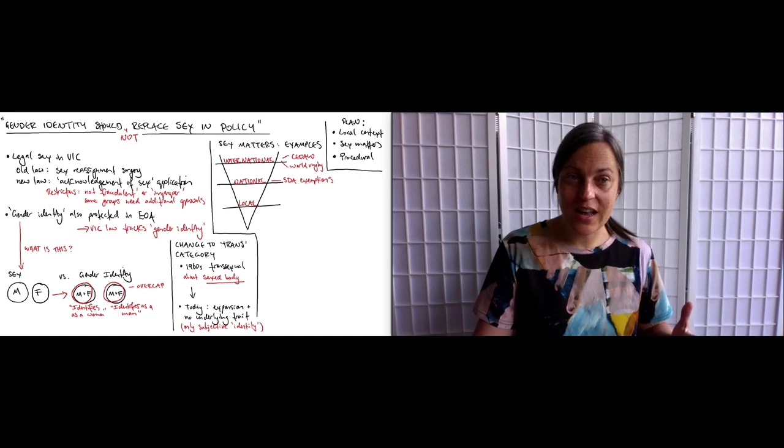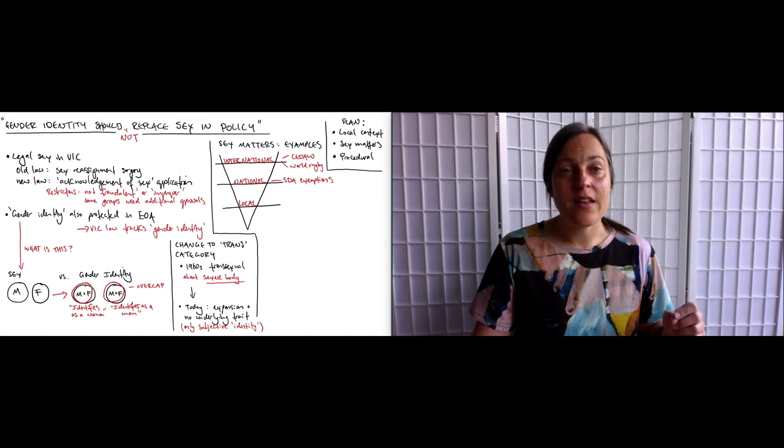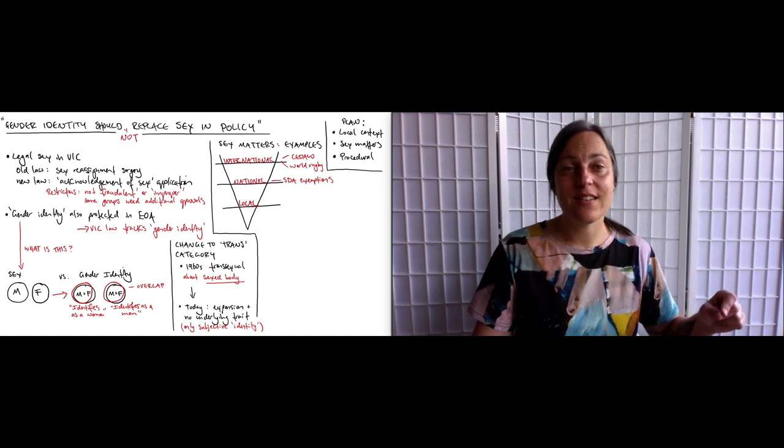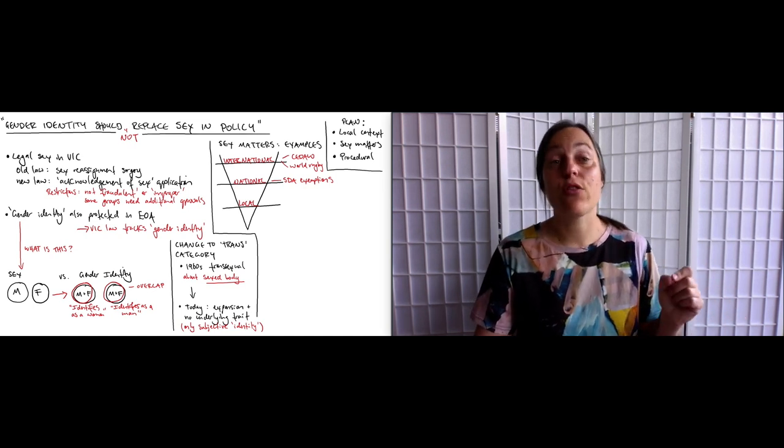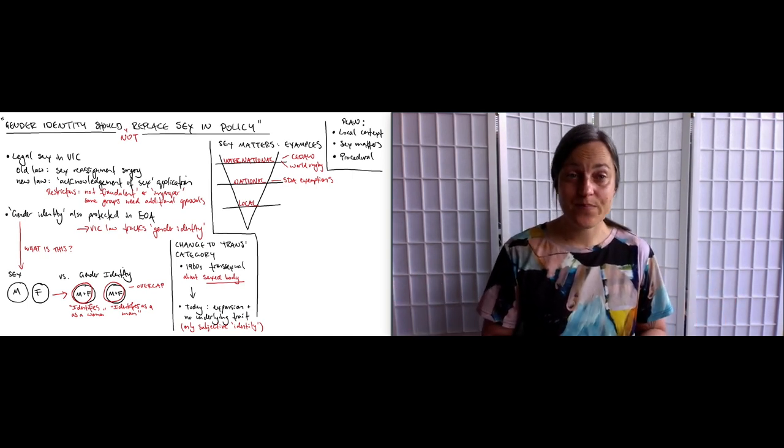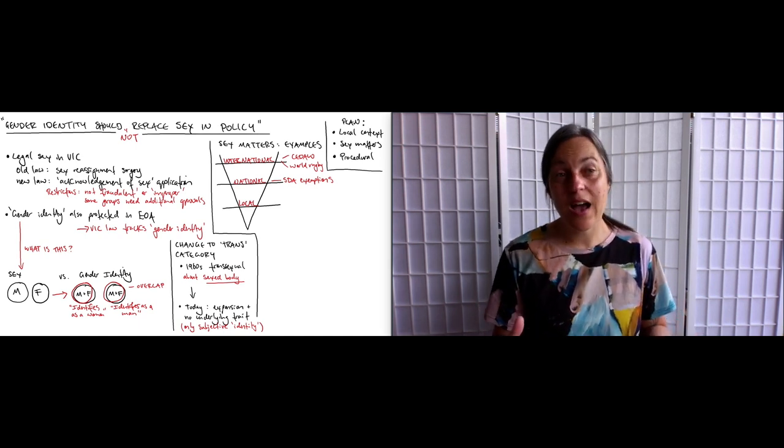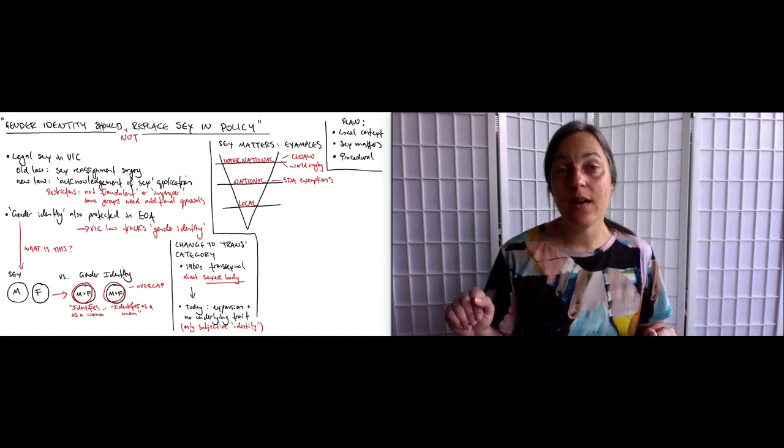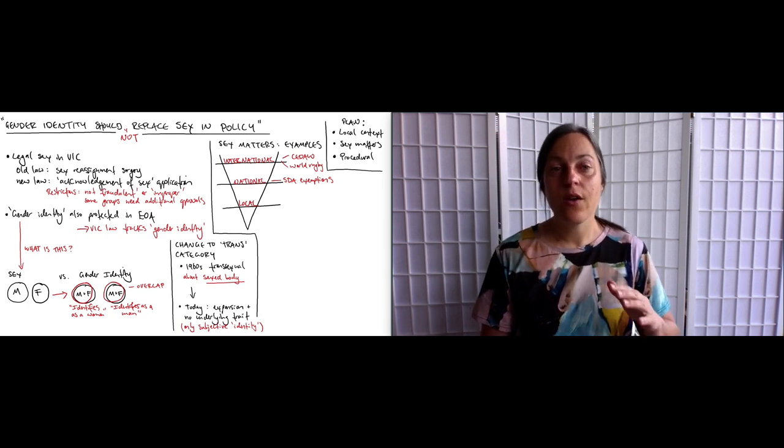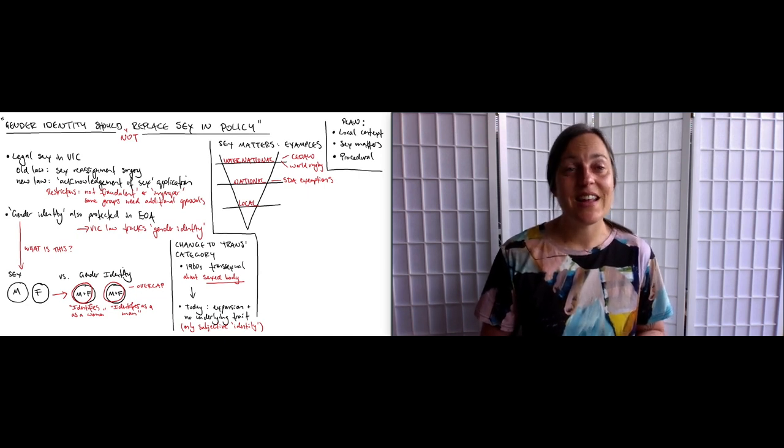The most significant change is that gender identity was added. Sex discrimination is understood as covering sex, characteristics that people of the sex generally have, and characteristics that people of the sex are generally thought to have. Although, because sex is not defined, it is not entirely clear what is meant here. Gender identity covers gender identity, defined in an unhelpful way as the gender-related identity, appearance, or mannerisms, or other gender-related characteristics of a person, whether by way of medical intervention or not, with or without regard to the person's designated sex at birth. And I say it's unhelpful because if we don't know what gender is, then it's not helpful to define gender identity in relation to it, and gender is not defined.